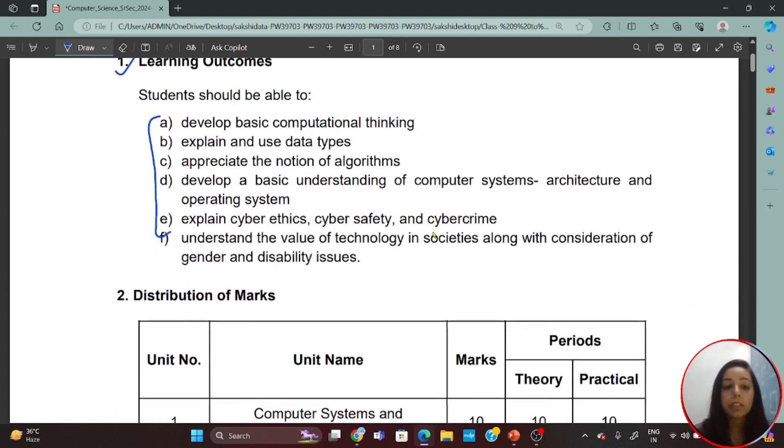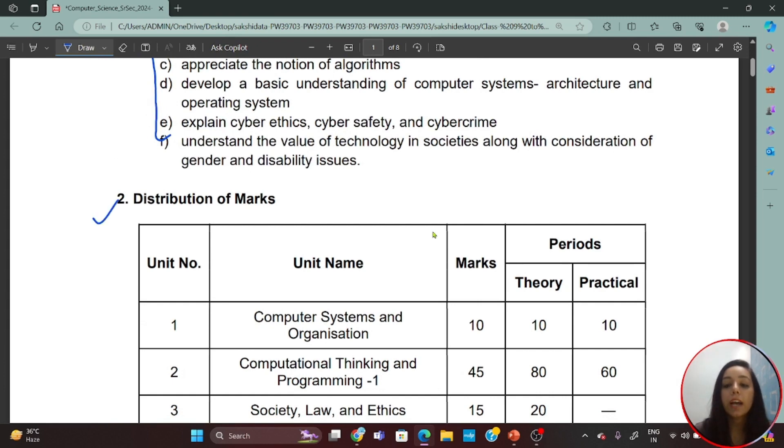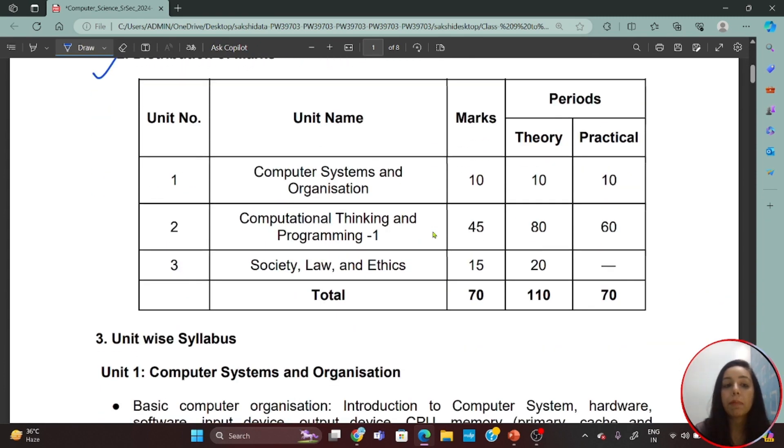If we talk about learning outcomes, in Class 11 you will study these things in the form of different units. Now let's understand the distribution of marks. We will have three units here. First is Computer Systems and Organization, which will carry 10 marks. In this unit, you have to learn about the basics of hardware, software, cache memory, which you have studied in classes 6 to 8 or 1 to 5. Then you have Computational Thinking and Programming 1, which will cover 45 marks maximum. In this unit you will learn the most about Python.